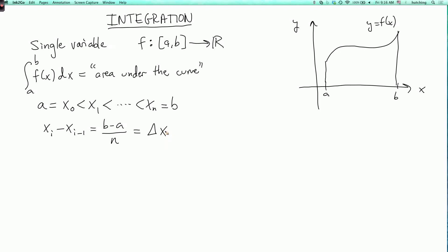And we choose a sample point, xi star, between xi minus 1 and xi. And then we define the integral from a to b of f of x dx as the limit as n goes to infinity of the sum from i equals 1 to n of f of xi star delta x.